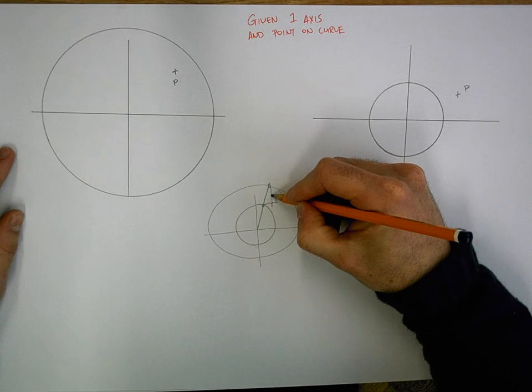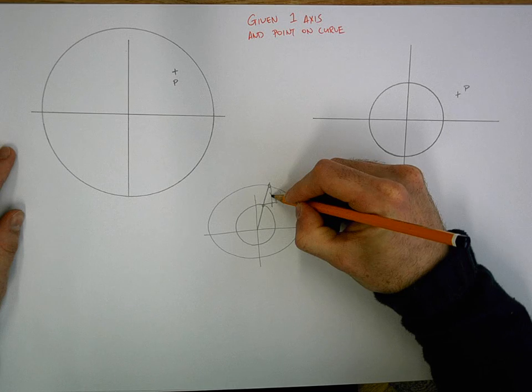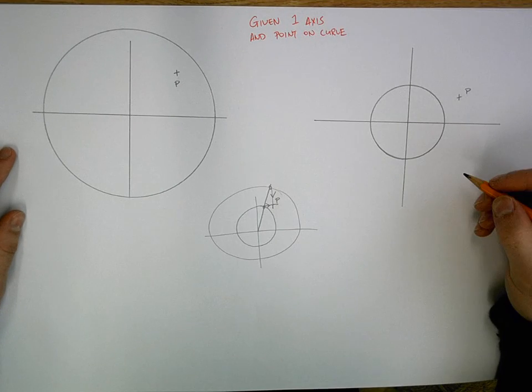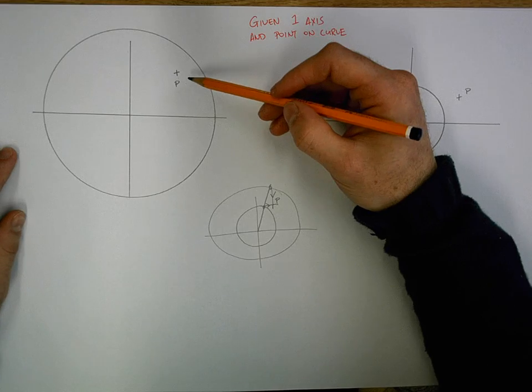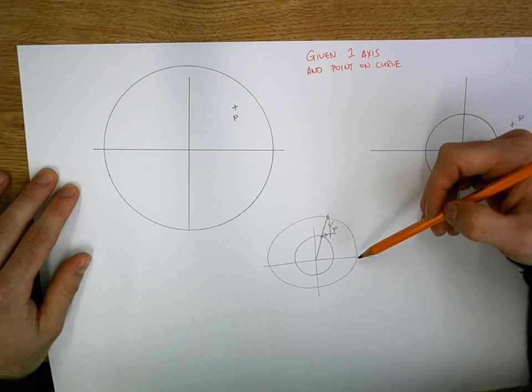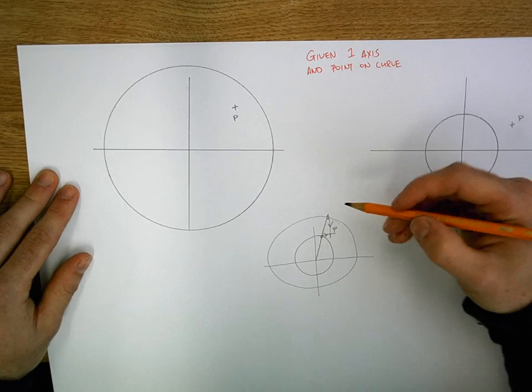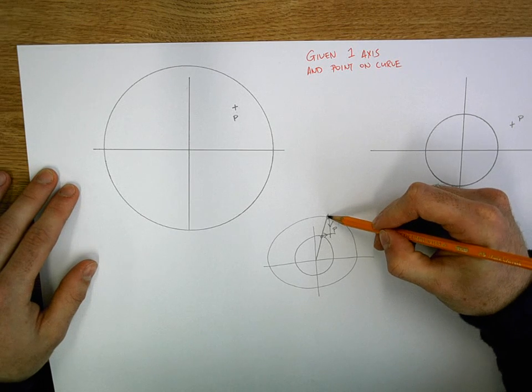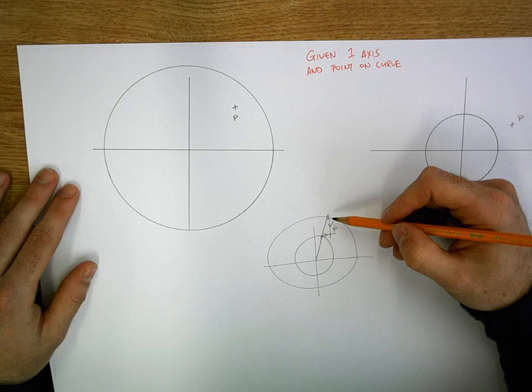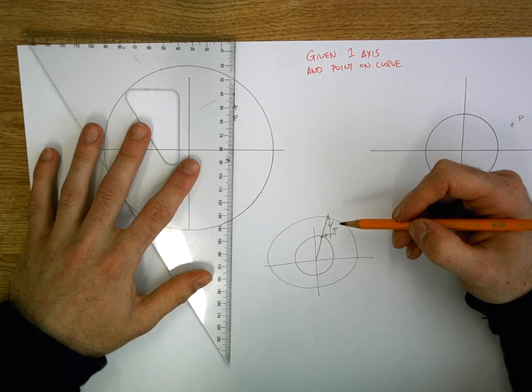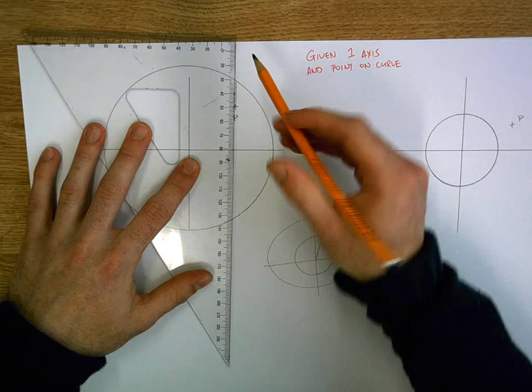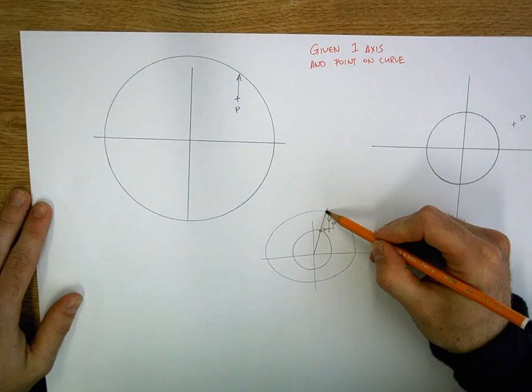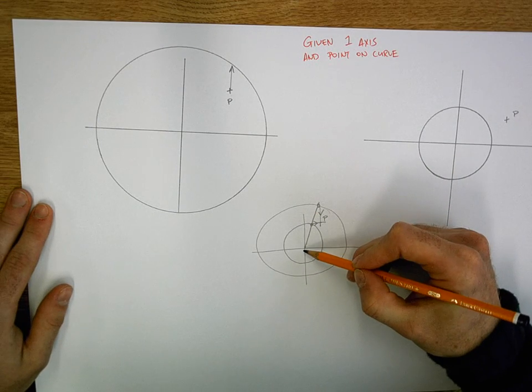Now point P, if we retract there, was found by coming downwards from the major and coming out from the minor. If we're given the major axis and we have point P, and we'll reference back to this - point P, the relationship between point P and the major axis is a straight line going up. So we draw a straight line going up.